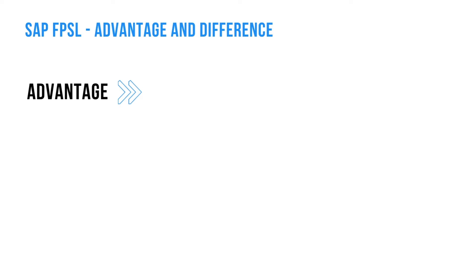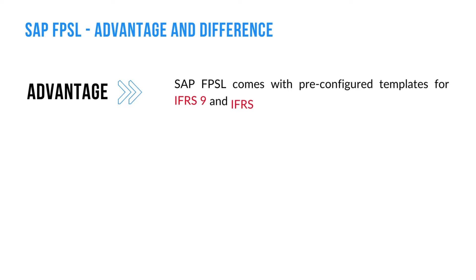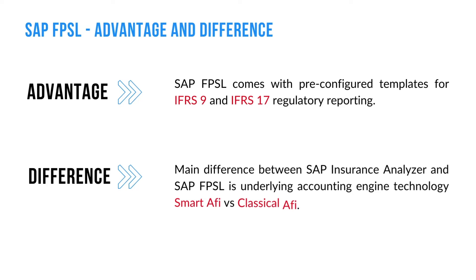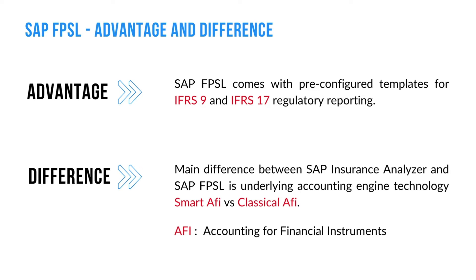The main advantage of using SAP FPSL is the out-of-the-box support for IFRS 9 and IFRS 17 regulatory reporting, with standard templates provided for both. The main difference between SAP insurance analyzer and SAP FPSL is the underlying accounting engine technology — insurance analyzer uses the classical AFI engine, while SAP FPSL uses the smart AFI engine. AFI stands for Accounting for Financial Instruments.